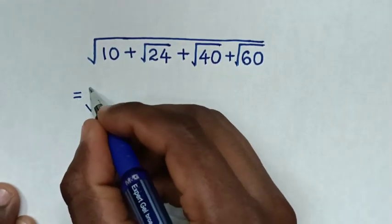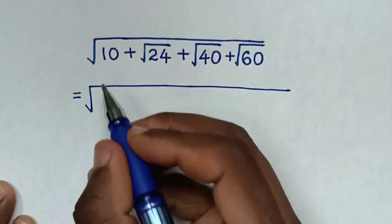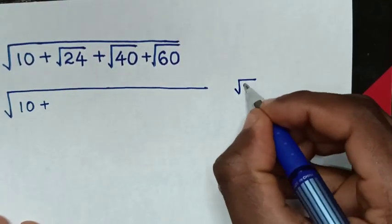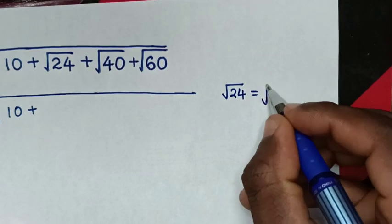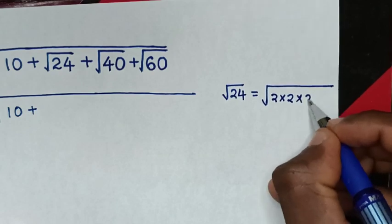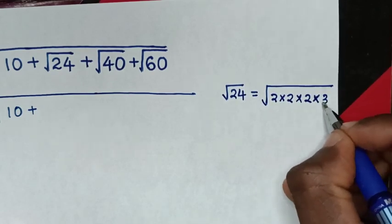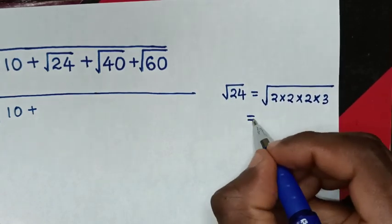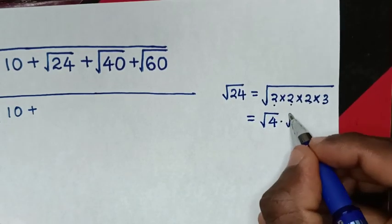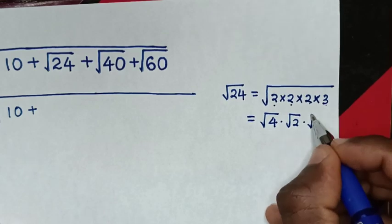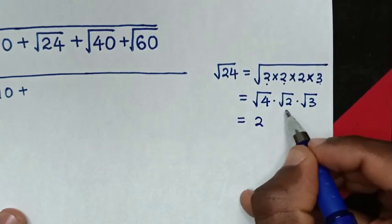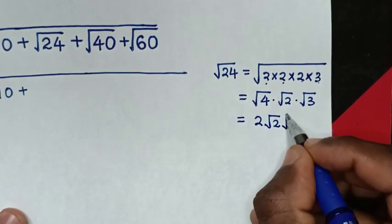It will be equal to square root of 10, then plus square root of 24. Square root of 24 is equal to square root of 2 times 2, which is 4, times 2 which is 8, times 3 which is 24. Then it will be equal to square root of 2 times square root of 2, which is square root of 4, then times square root of 2 times square root of 3.